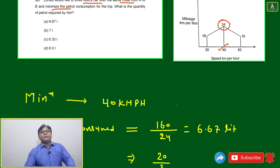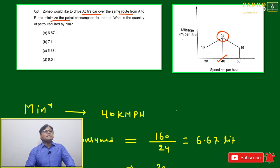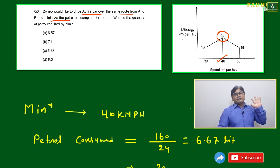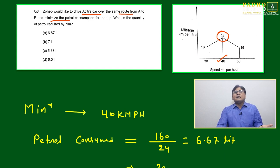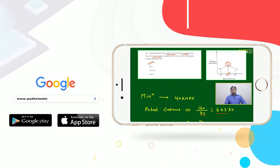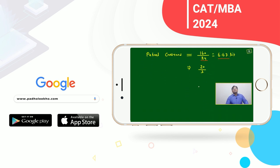The best mileage is when the speed is 40, so he will just drive the car at a constant speed of 40 km per hour. Then the petrol consumption will be less, means 160 divided by 24, it will be around 6.67 liters. We just have to observe the graph. If at 40 km per hour one liter gives 24 kilometers, then for 160 kilometers, 6.67 liters.